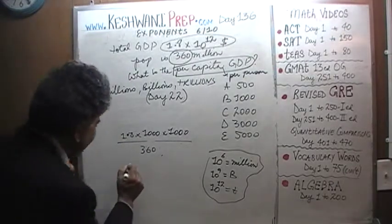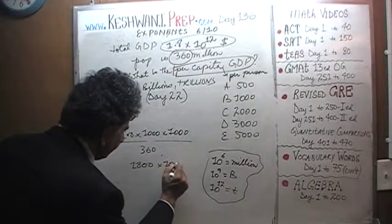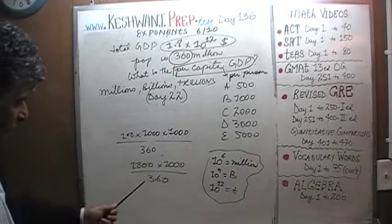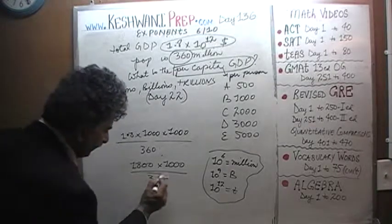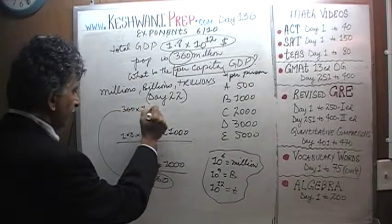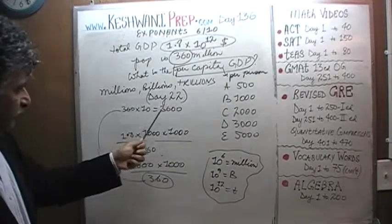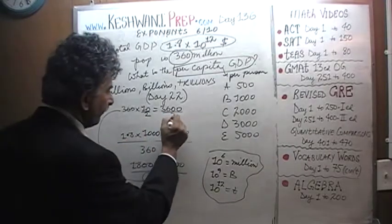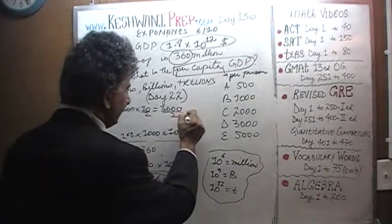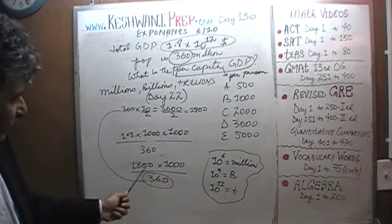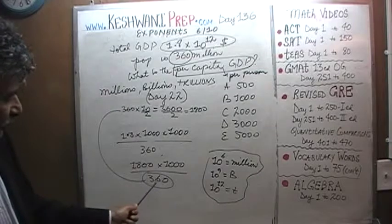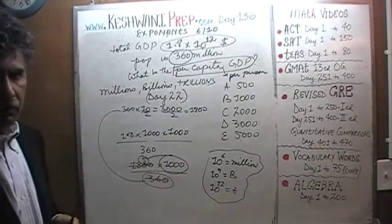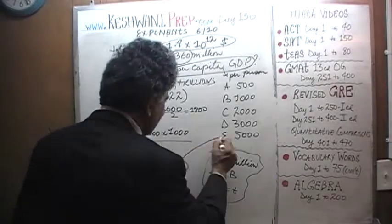So if you have 1.8 times 1000, that's 1800 times 1000 divided by 360. What do we do next? Well, the rest is very simple. What we have to understand here is that 360 times 10 is 3,600. Therefore, 360 times 5 would be half of that. Half of 36 is 18. In other words, what I'm trying to make you understand is that 1800 is 5 times 360. So we can divide top and bottom by 360 and it becomes 5. Voila. 5 times 1000. The per capita GDP in this country is 5 times 1000. The answer is 5000.